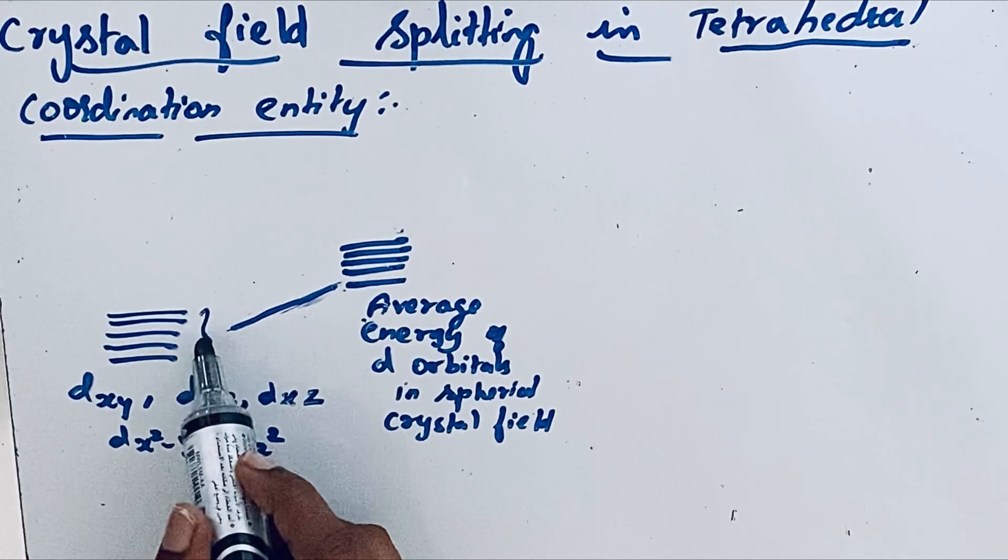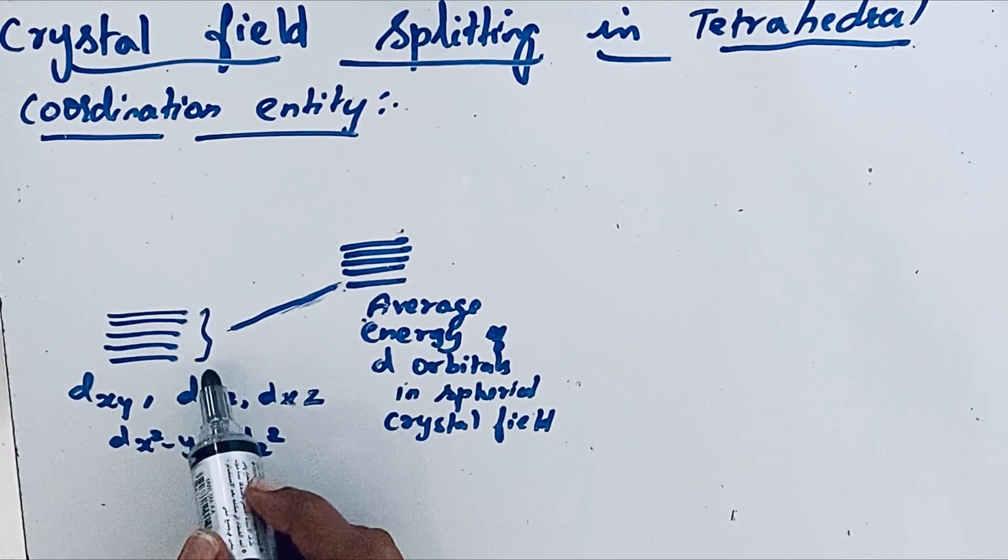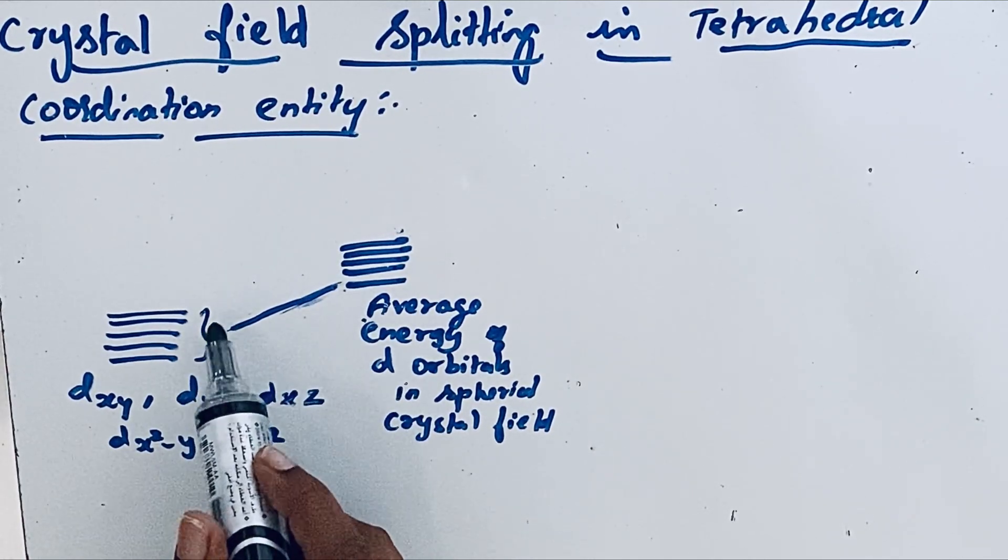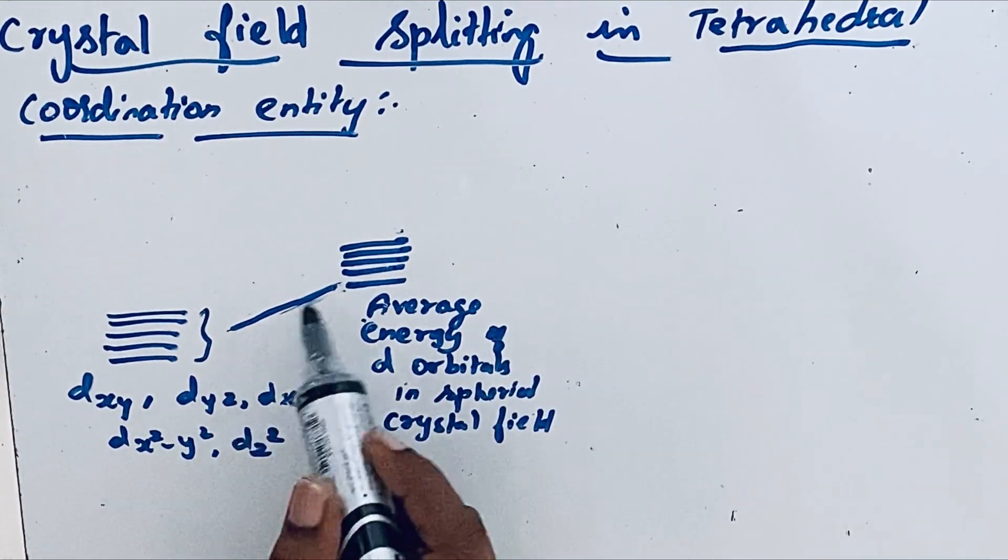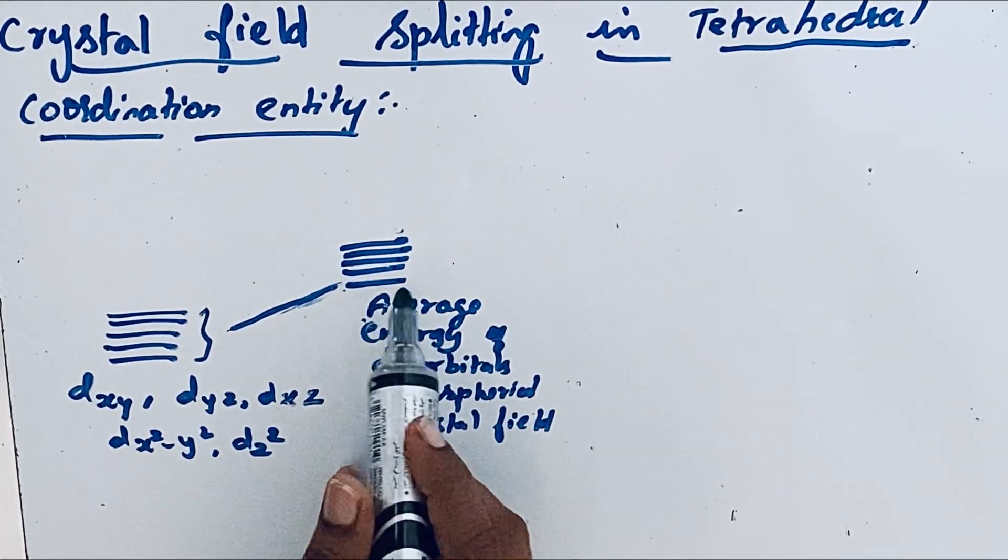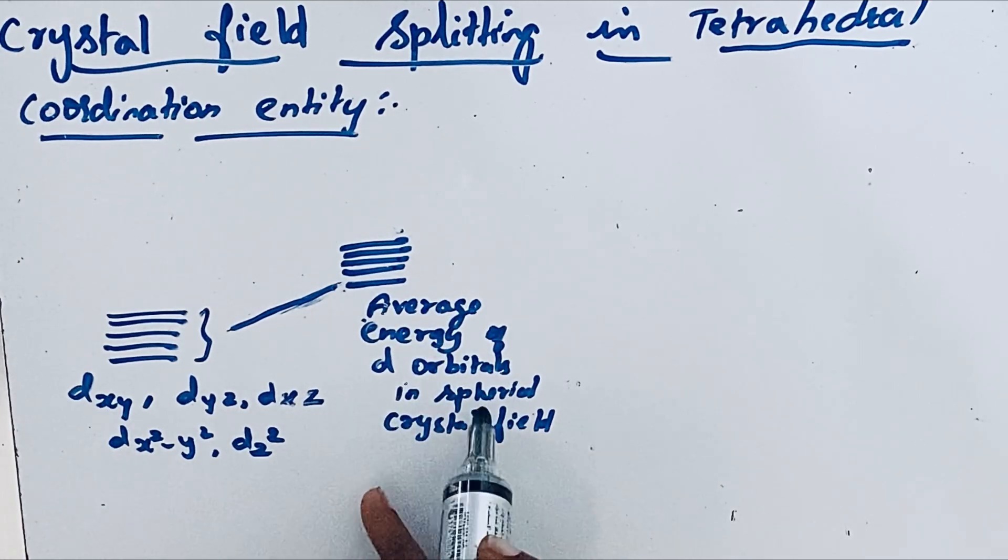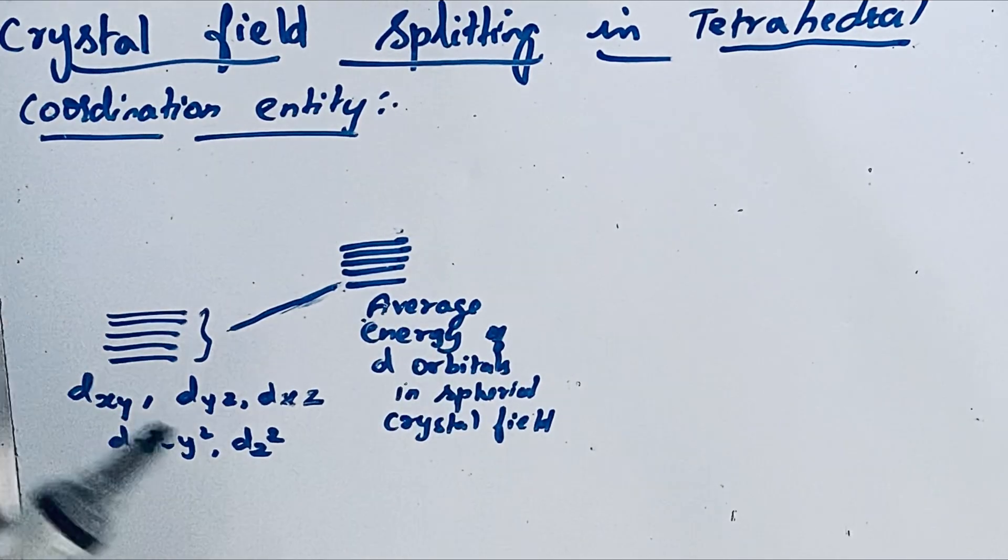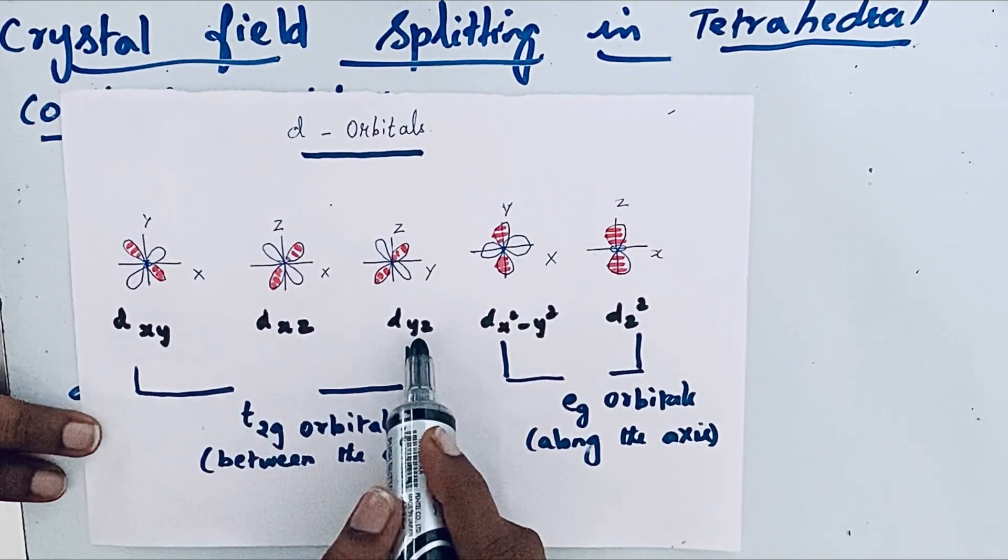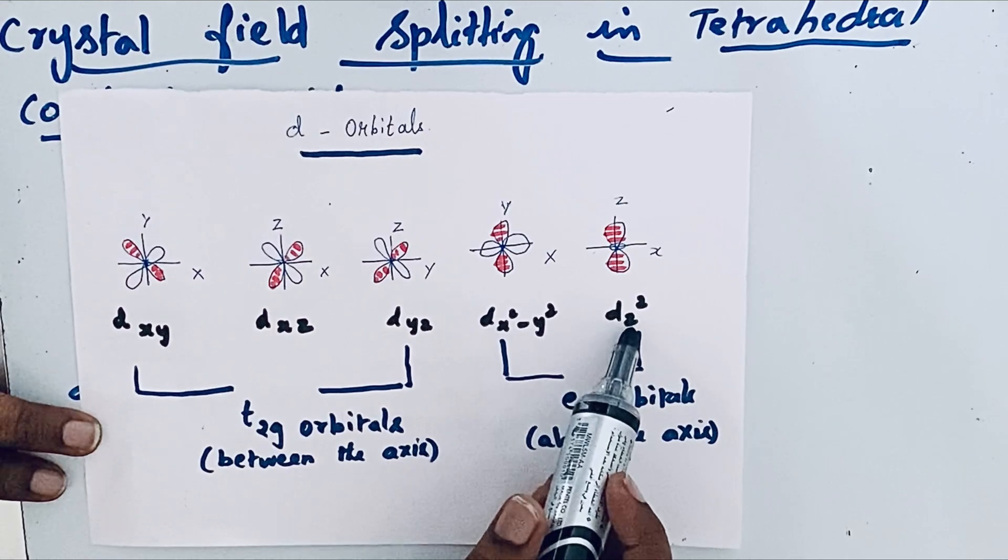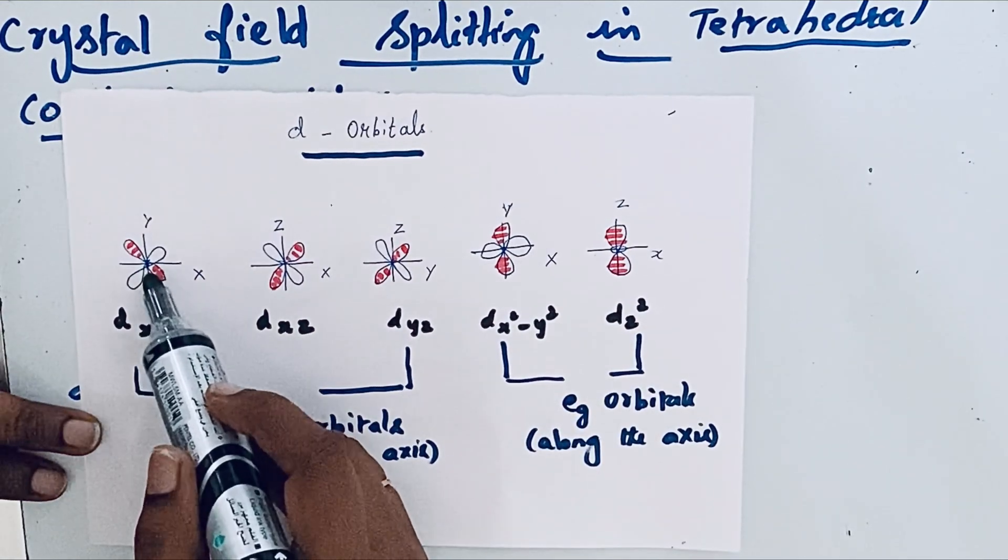Under the influence of these ligands in tetrahedral field, there are four ligands. The energy is increased, so average energy of the orbitals in spherical crystal field. Look at the picture here: dxy, dxz, dyz, dx squared minus y squared, dz squared. You can see these orbitals - these three orbitals are between the axis.